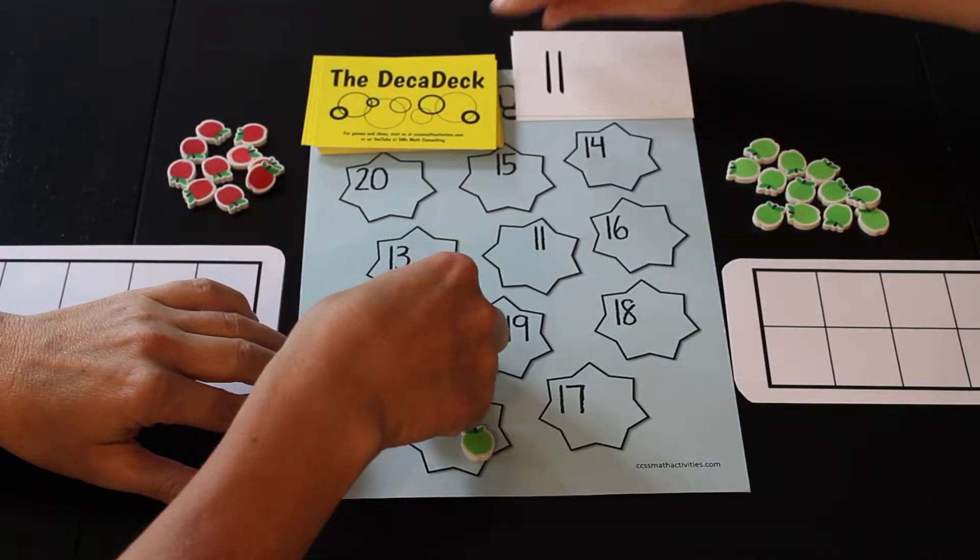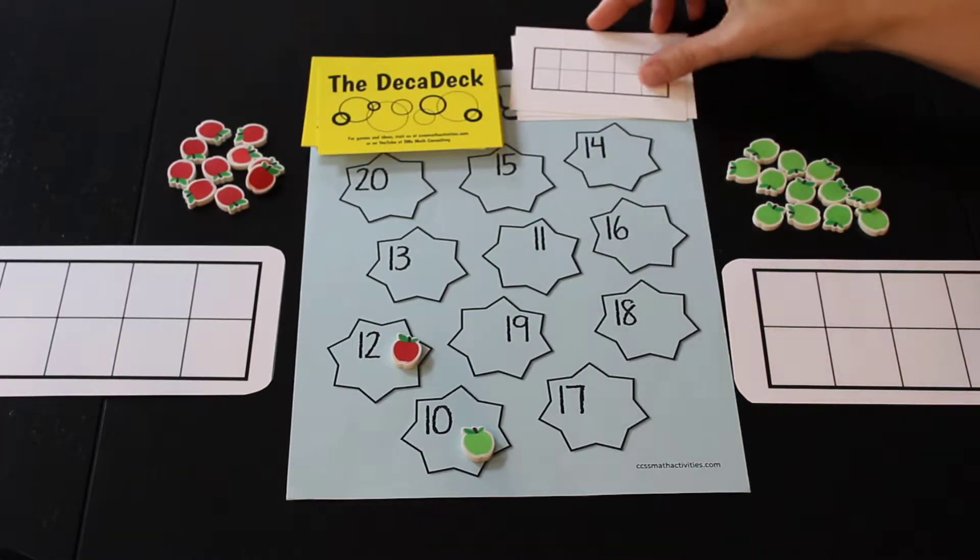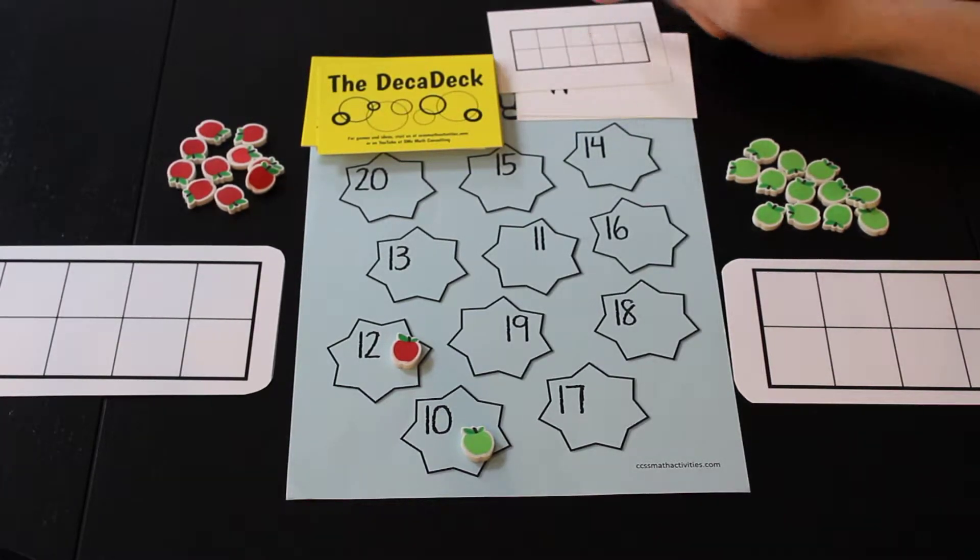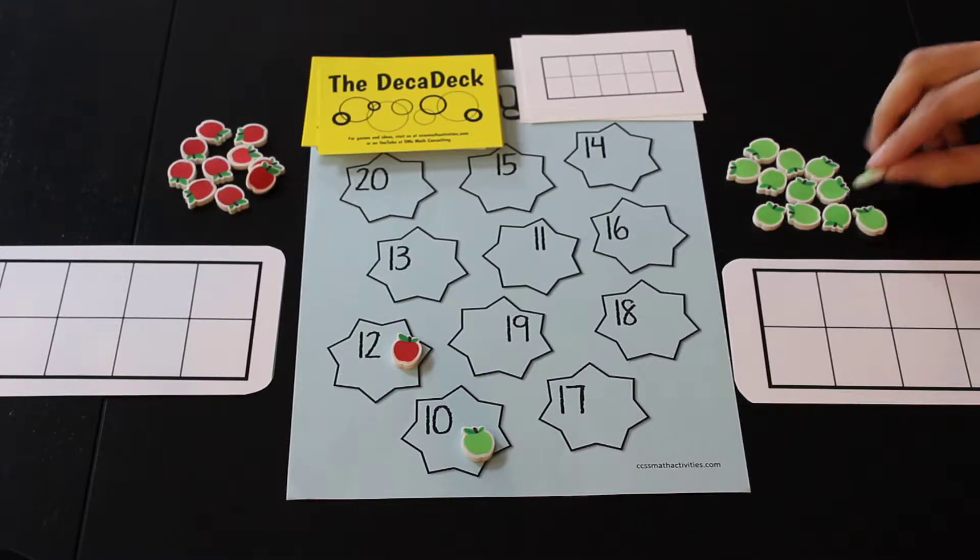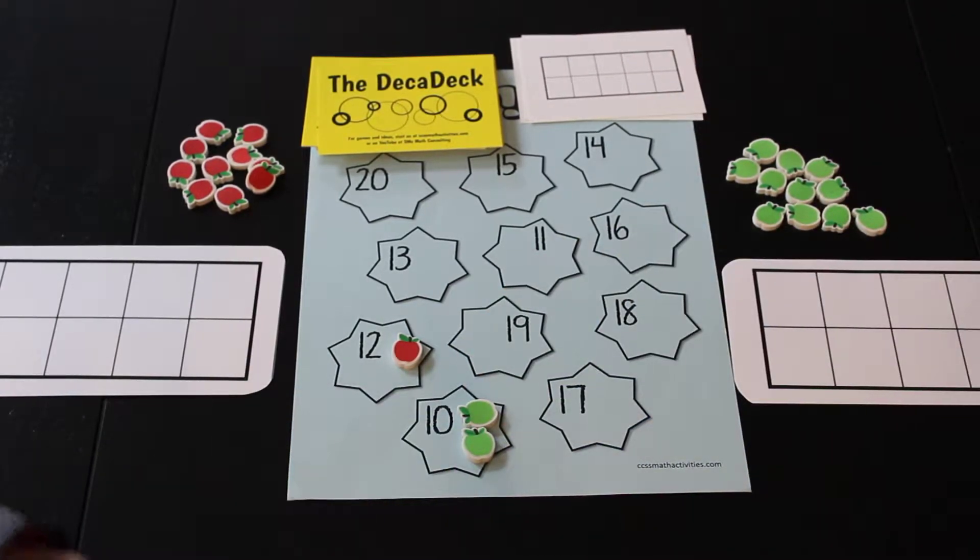Oh, I got another zero. No dots in the 10 frame. Zero plus 10 is 10. Well, you have 2 on the 10 right now. I really do, okay.